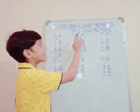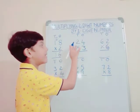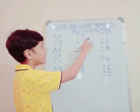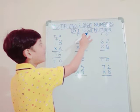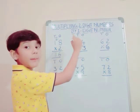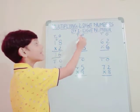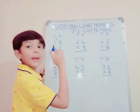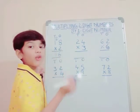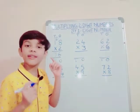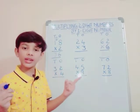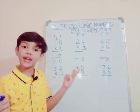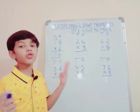Now our second sum: 24 into 3. First of all, we should multiply the 1's digit number by 3. That is: 3×1=3, 3×2=6, 3×3=9, 3×4=12.